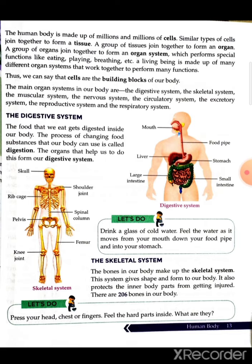The main organ systems in our body are the digestive system, the skeletal system, the muscular system, the nervous system, the circulatory system, the excretory system, the reproductive system, and the respiratory system. All these systems are very important for every human being and are each made up of many organs working together.